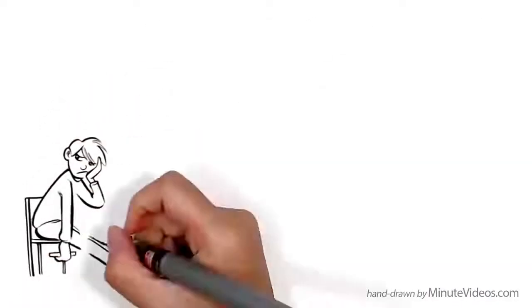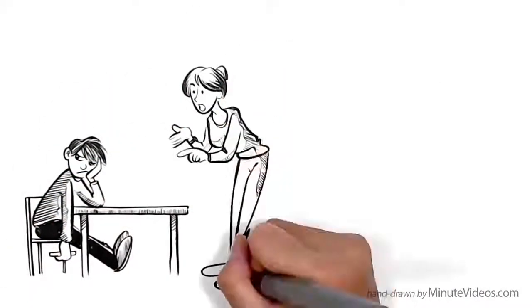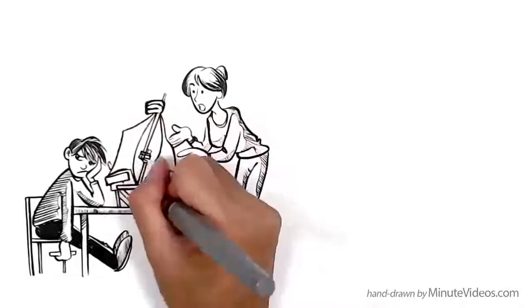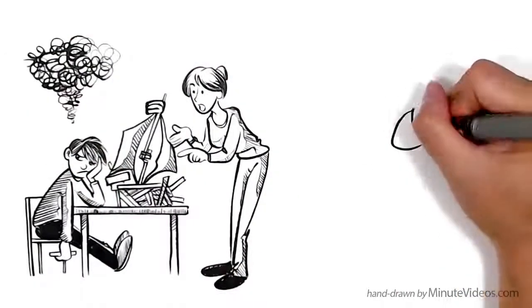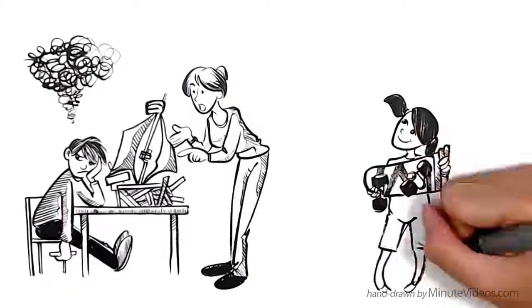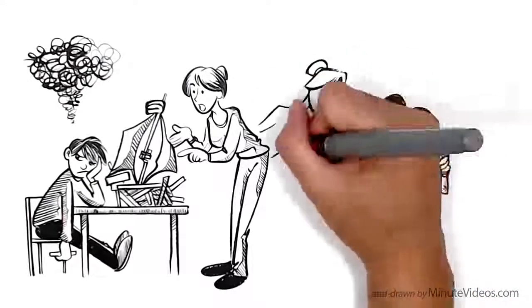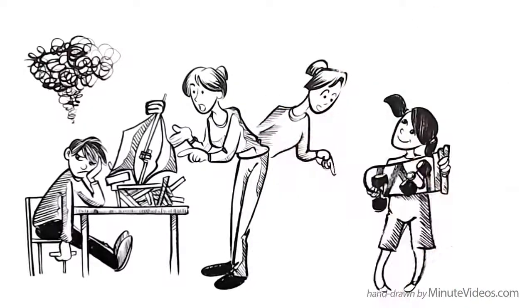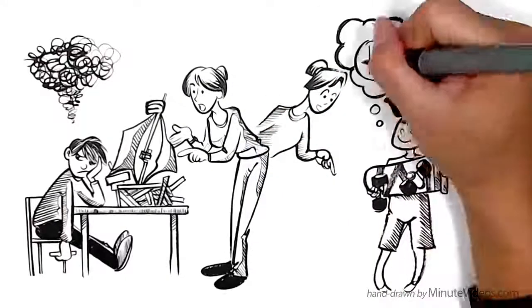Jay avoids feedback. If the teacher tells him how to improve an assignment he has been working on, he takes it personally. Ann knows that to improve, she needs to listen to constructive criticism. She also understands that it's not her that is being assessed, but the results of her work on that one day.